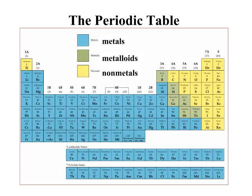When you look at the periodic table, you notice that most of the elements are metals. Everything to the right of this stair-step line would be a non-metal, and everything to the left is a metal. Elements that exist along the stair-step line have properties of both metals and non-metals and are called metalloids.